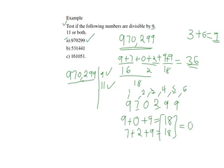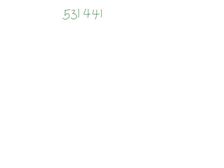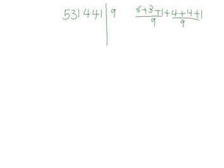Part B, we have 531,441. Let's check if it is divisible by 9. We add the sum of all the digits: 5 plus 3 plus 1 plus 4 plus 4 plus 1. This gives us 9 plus 9, which is 18, and 18 is divisible by 9. Therefore this number is divisible by 9.